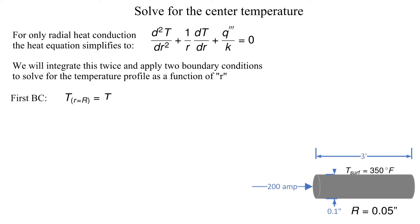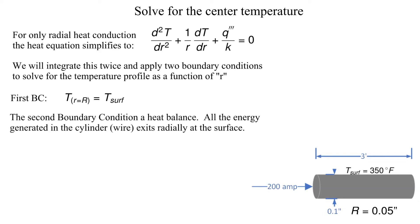The first boundary condition is that the surface temperature is 350 degrees Fahrenheit. For the second boundary condition we utilize a heat balance. The total heat generated in the wire exits radially at the surface or the radius equals capital R.